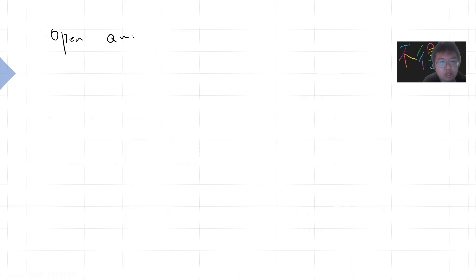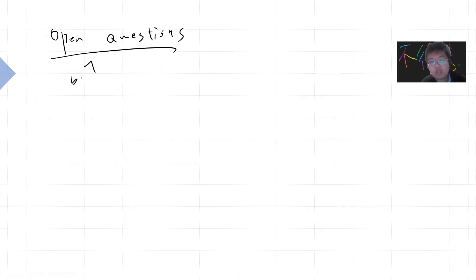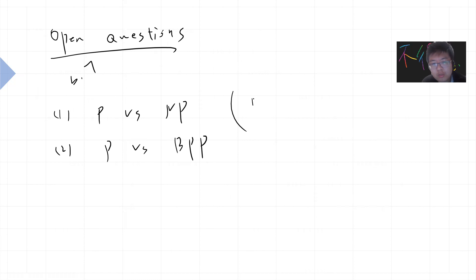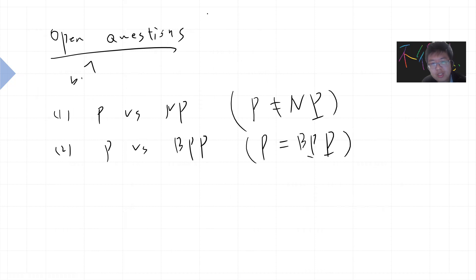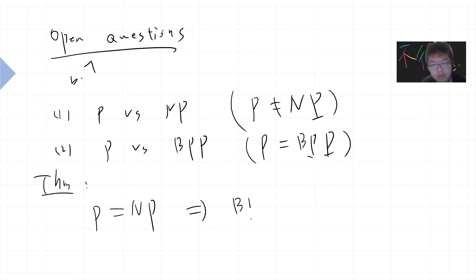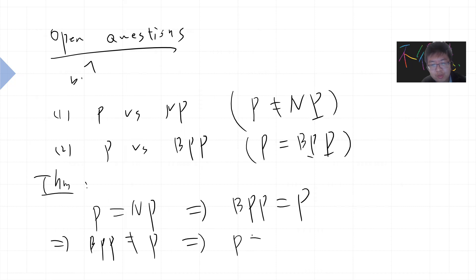There's an open question — actually the two biggest open questions in computer science. The first is P versus NP. The second is P versus BPP. People believe P is not the same as NP, but people believe P may be the same as BPP. There is a non-trivial theorem: if P equals NP, then you can prove that BPP equals P.